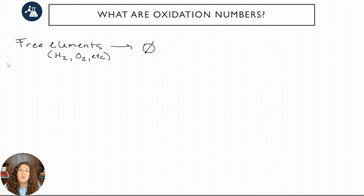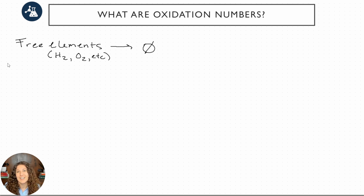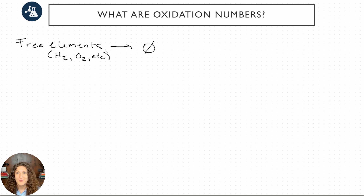This is because even if we broke these elements up into their individual atoms, they're not going to ionize. Hydrogen gas isn't going to have one hydrogen be positive and one negative — they're just existing as neutral atoms. That's why they have an oxidation number of zero if we see a free elemental compound.